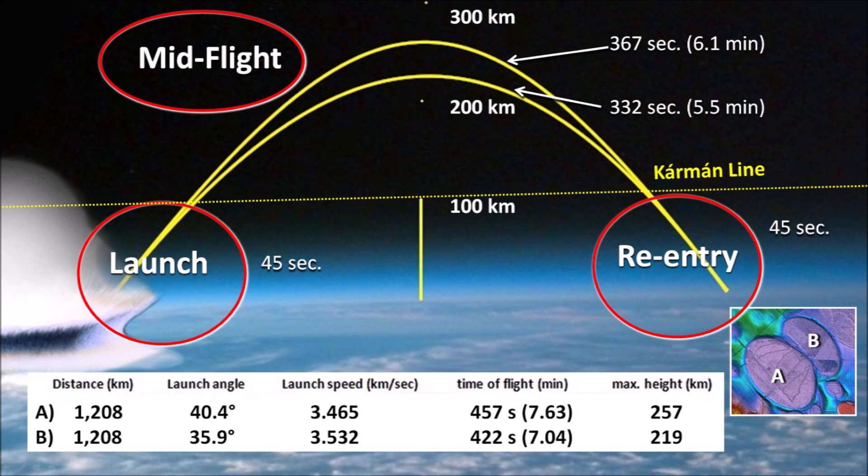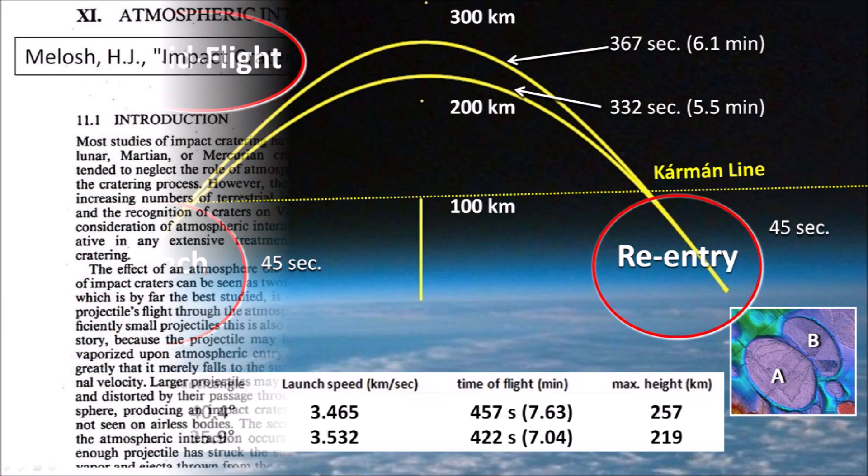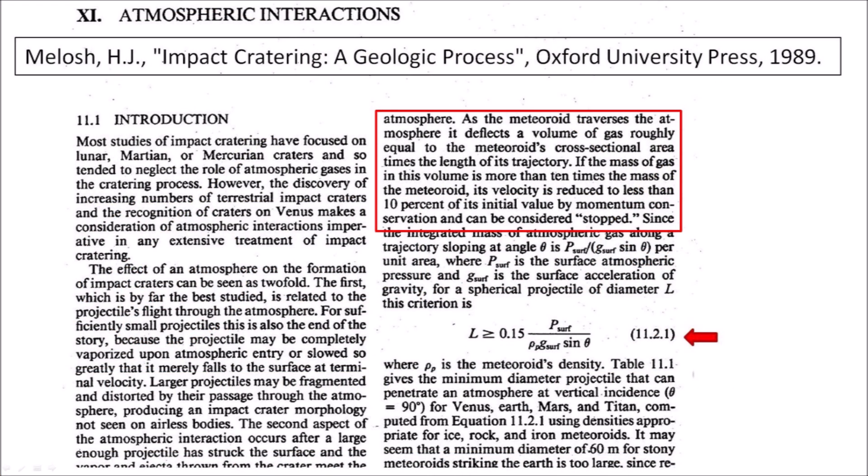The reentry stage lasts approximately 45 seconds. An ice projectile encounters increasing air density as it traverses the atmosphere, and its mass decreases due to ablation. In the book Impact Cratering: A Geologic Process, Professor Jay Melosh says that as a meteoroid traverses the atmosphere, it deflects a volume of gas roughly equal to the meteoroid's cross-sectional area times the length of its trajectory. If the mass of gas in this volume is more than 10 times the mass of the meteoroid, its velocity is reduced to less than 10 percent of its initial value by momentum conservation and can be considered stopped.